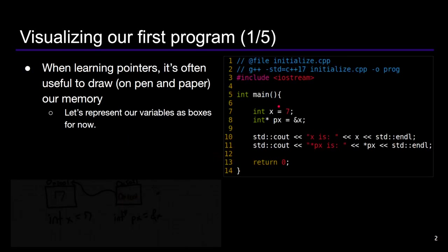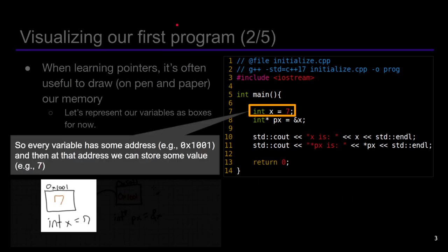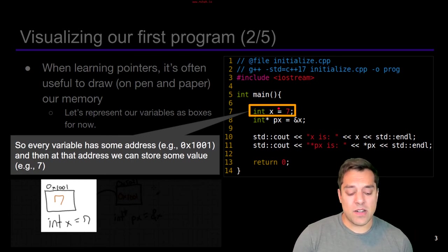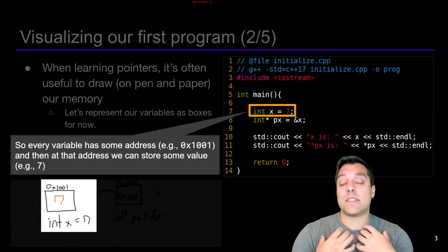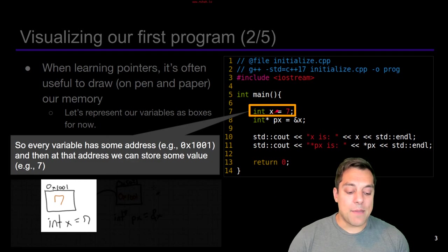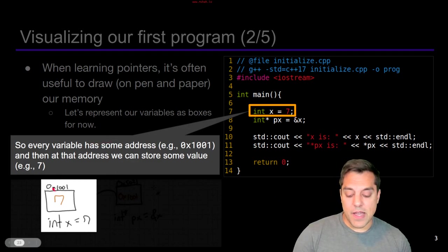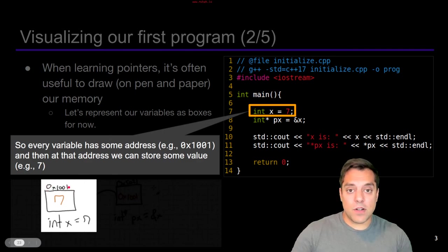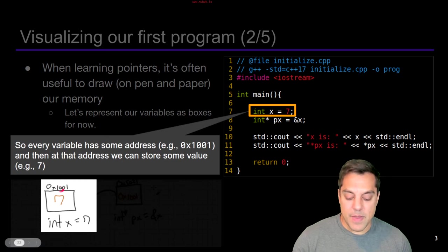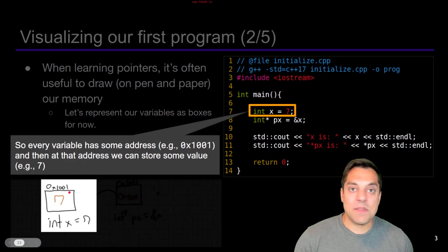Let's go ahead and visualize our program. The first thing is realizing that x must have some address. This is true of any variable we have — it has to be stored somewhere. X is a convenience for us as programmers; at a deep level, x is our way to refer to just some address in memory that happens to have the value seven. We can visualize this by drawing a box representing a piece of memory, writing in a seven, and noting it lives at some address like 0x1001.